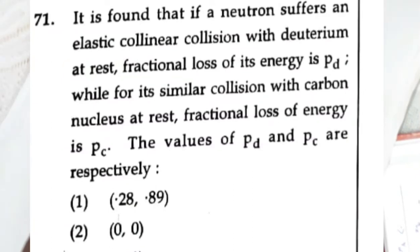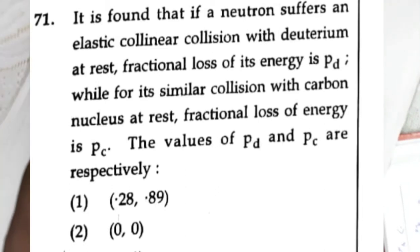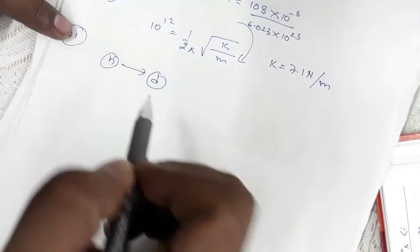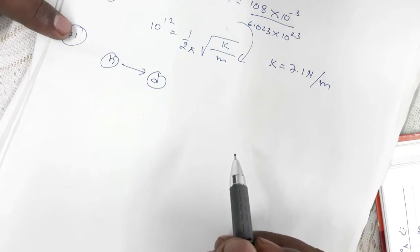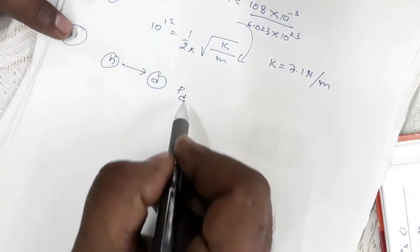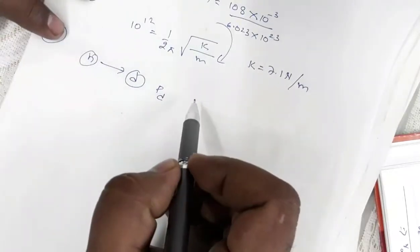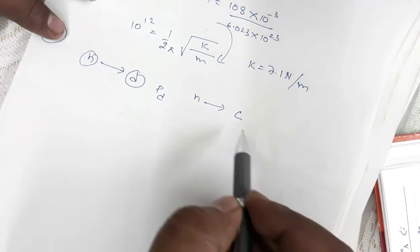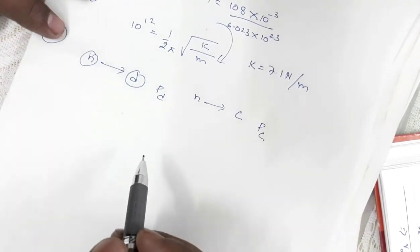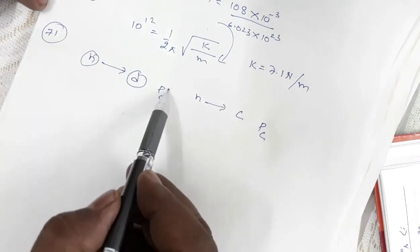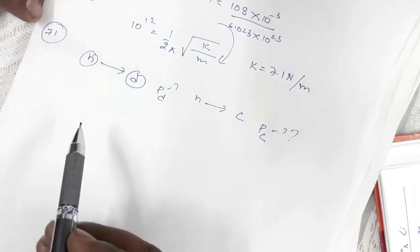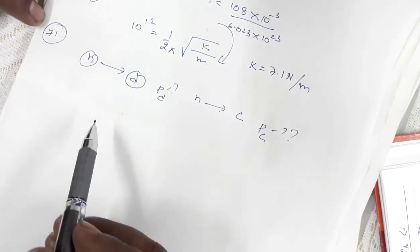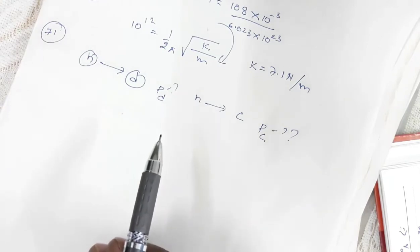Question number 71 states: when a neutron undergoes elastic collision with deuterium, the fractional loss of energy is pd; when the neutron undergoes collision with carbon, the fractional loss of energy is pc. We are asked to calculate the values of pd and pc.